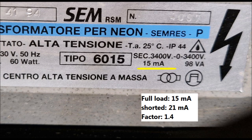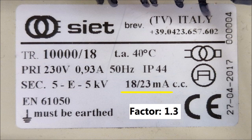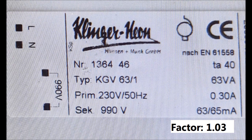In Europe it's different. When you only have one value on the nameplate, it's the nominal current — that means at full tubing length. If we have a shorter tube or a short circuit, the current will be higher than what's on the plate. If you are lucky, the Euro transformer has both values on the nameplate, so you have all the information at once. The factor between nominal and max current can differ depending on the transformer's internal construction.